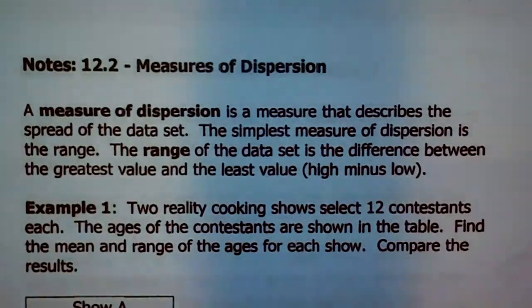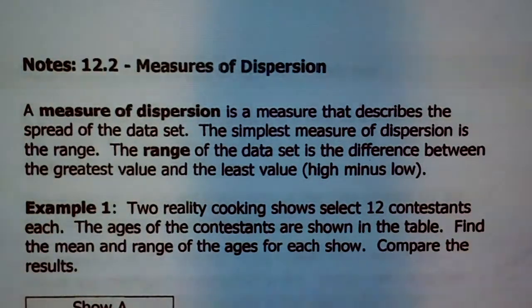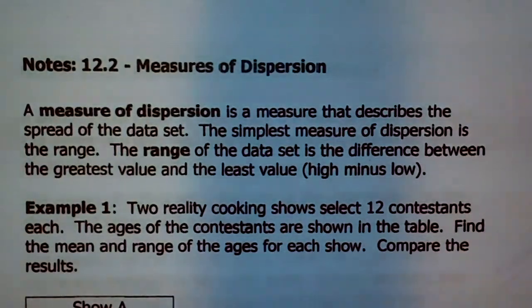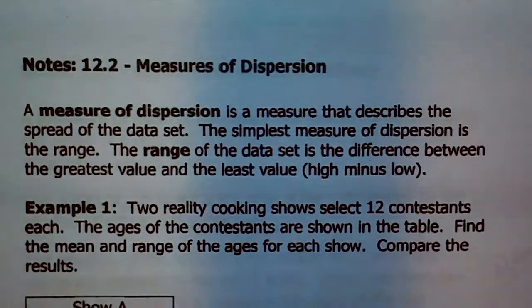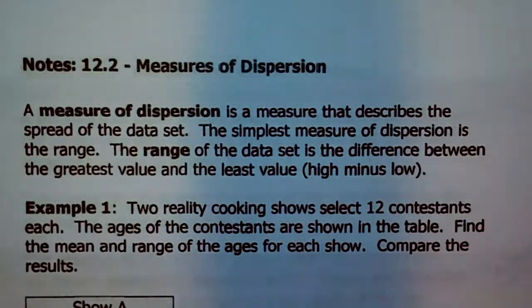So first off, what is a measure of dispersion? It's a measure that describes the spread of the data set — how spread out it is. That kind of reminds me of range. So that is the simplest measure of dispersion — it's range.